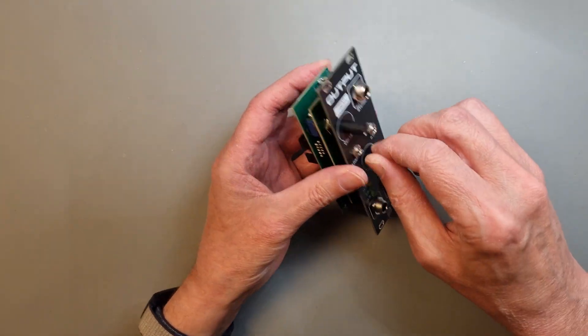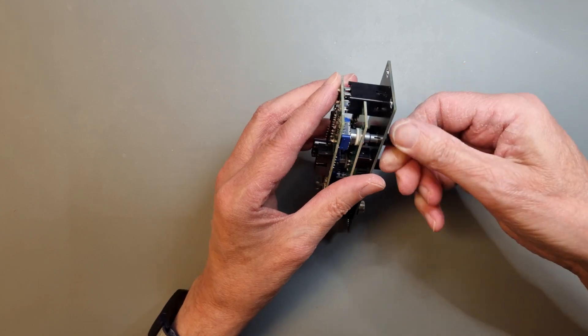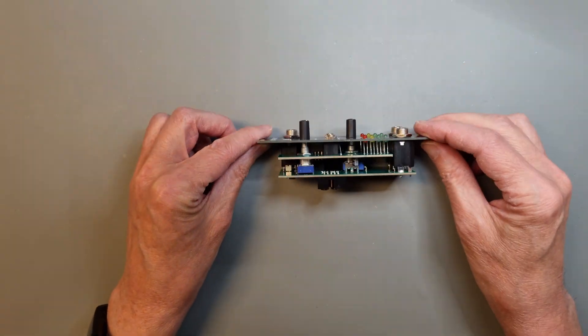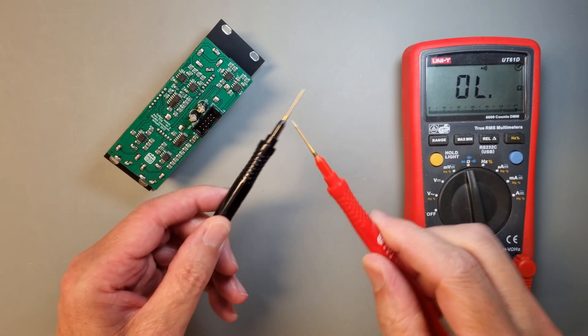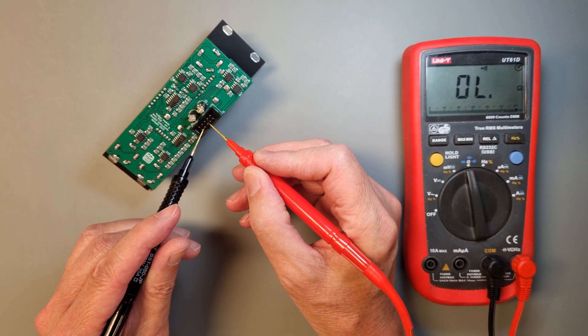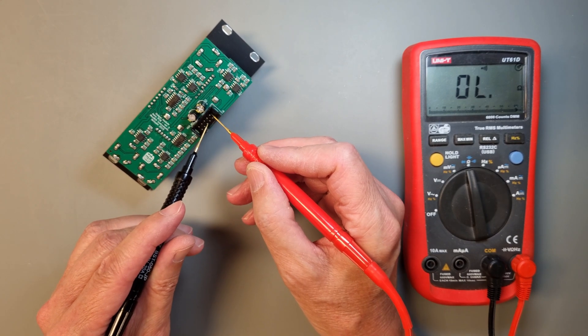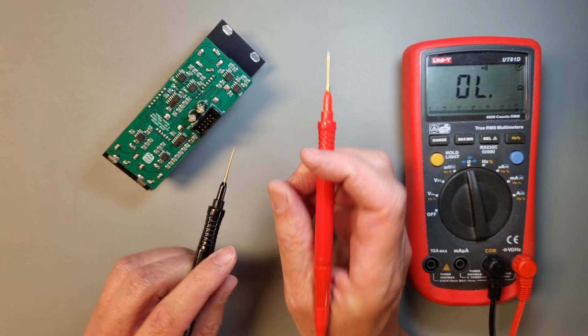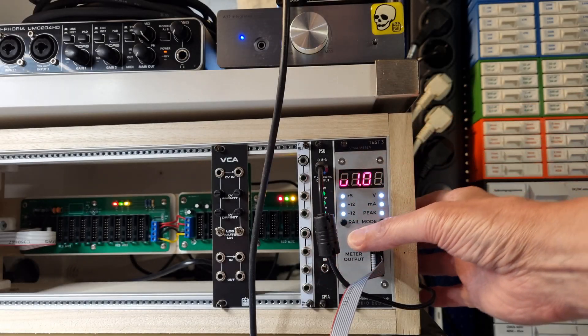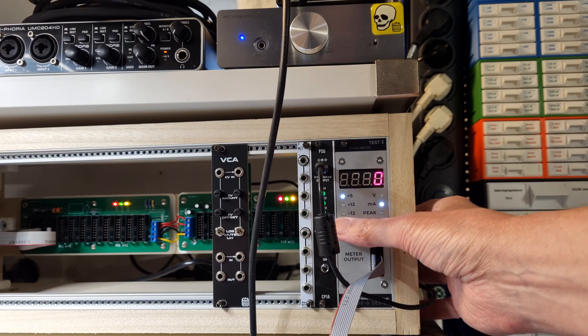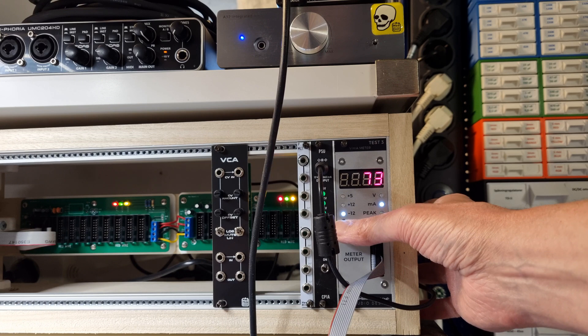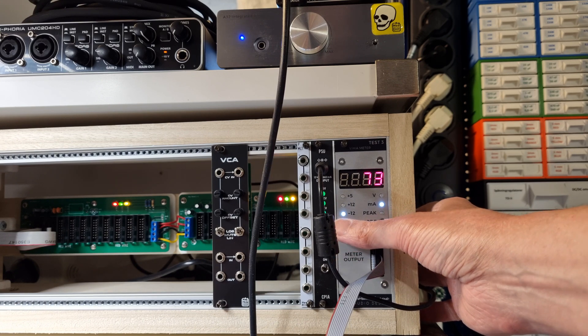Before we hook up the module to the modular case, it's always a good idea to double check that the power supply rails are not shorted. You can do this with a multimeter in beep mode. The expected idle power consumption for an unconnected module is around 75 milliamps on both plus 12 volt and minus 12 volt rails.